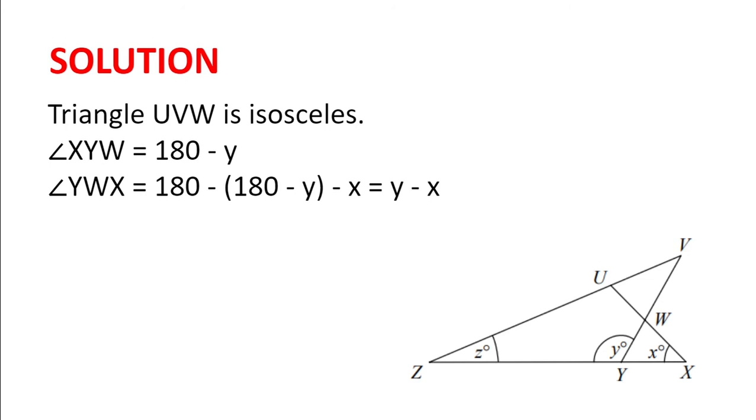Now because angle YWX and UWV are vertically opposite, they're equal. And so angle YWX equals angle UWV equals angle WUV. And so angle ZVY is 180 minus 2 multiplied by angle UWV, which is 180 minus 2 multiplied by (Y minus X).